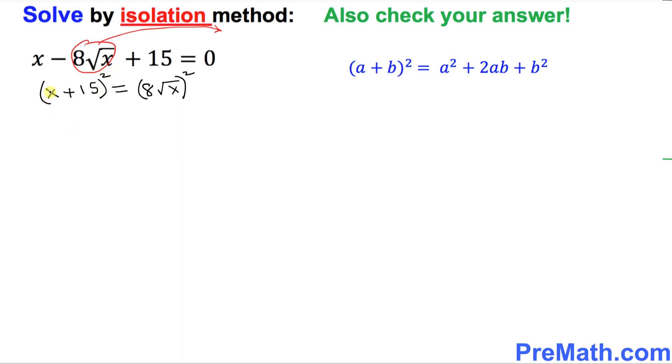And this square, x plus 15 square, could be opened up. We can expand it using this well-known formula. a plus b squared equal to a squared plus 2ab plus b squared.